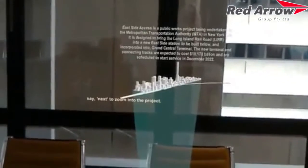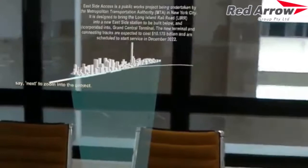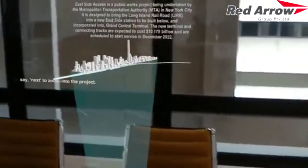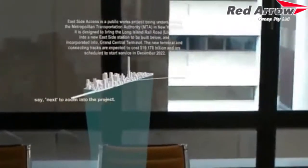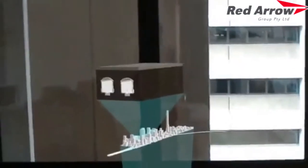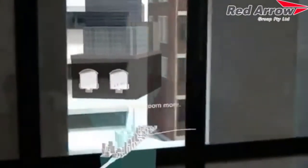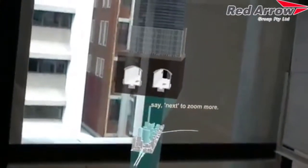We are now zooming in to the east side station to be built below the Grand Central Terminal. This is a cross section view under the Grand Central Terminal of the rail system.